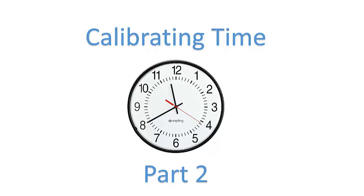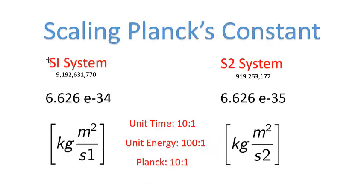Welcome to part two of my video series called 'Calibrating Time.' In the previous video, I showed how to calibrate time to two different time scales. The original time scale is the current SI time scale, calibrated to the cesium atom — when the cesium atom oscillates 9,192,631,770 times, we call that one second. I then calibrated another time system called S2 to 919,263,177 cesium oscillations.